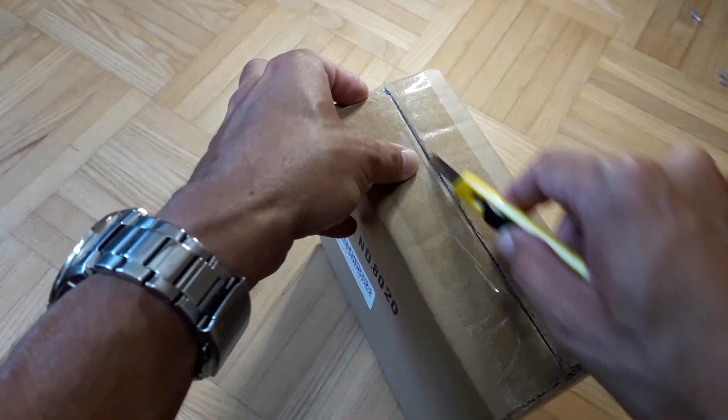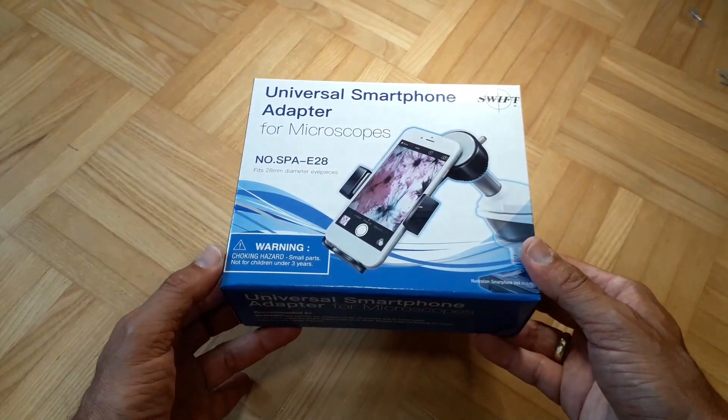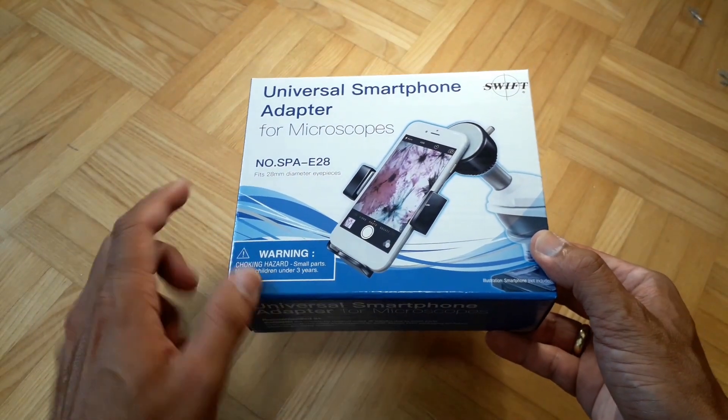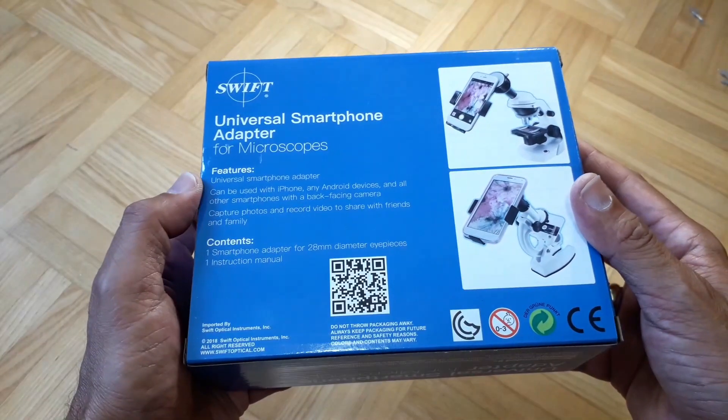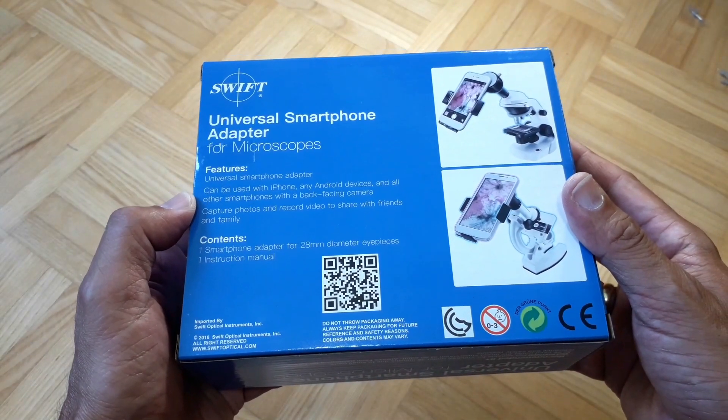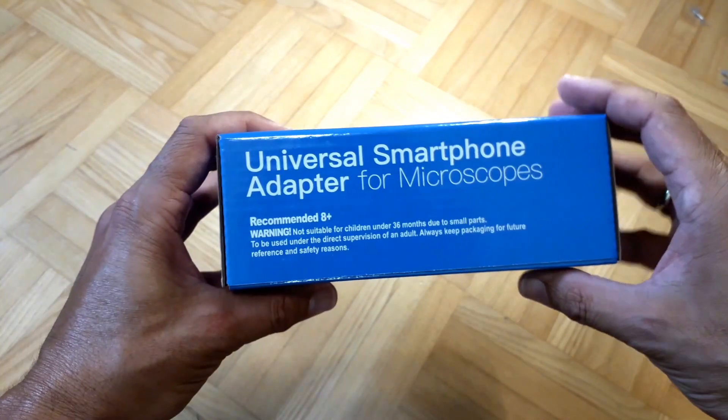I was very anxious to see what was in it. There was a second box in it and this is how it looks like. It is for 28 millimeter diameter eyepieces and it features a universal adapter which also works for iPhone and Android devices.